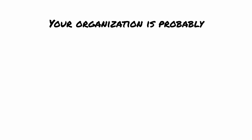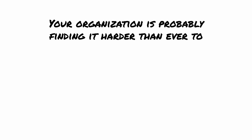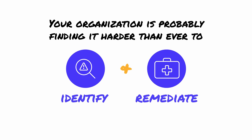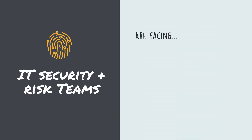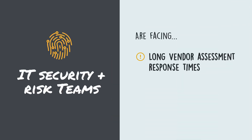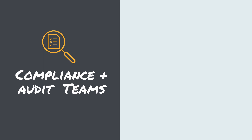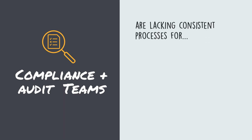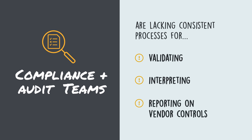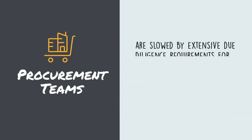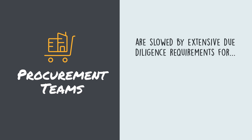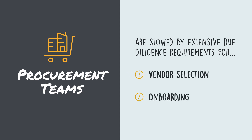Your organization is probably finding it harder than ever to identify and remediate third-party risks. IT security and risk teams are facing long vendor assessment response times and overwhelming data analysis challenges. Compliance and audit teams are lacking consistent processes for validating, interpreting, and reporting on vendor controls. And procurement teams are slowed by extensive due diligence requirements for vendor selection and onboarding.